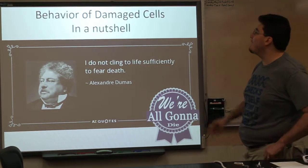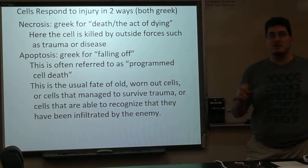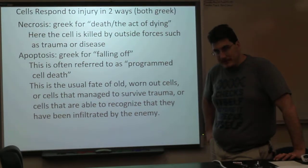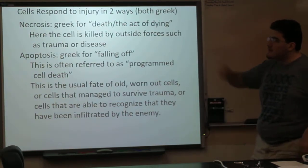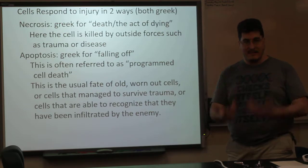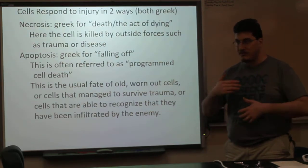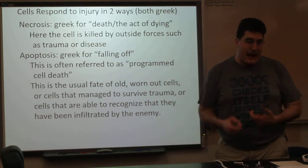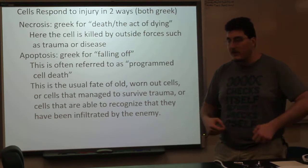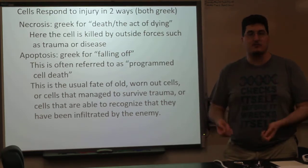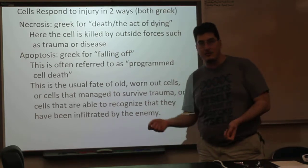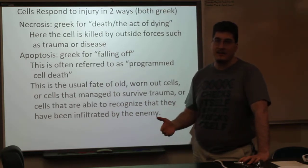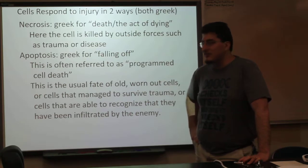Cells will respond to injury in two ways, and both of those ways have Greek names. Necrosis is Greek for death or the act of dying — here a cell is killed before it has a chance to put its affairs in order. Apoptosis — spelled apoptosis but pronounced apoptosis — is Greek for falling off, and is often referred to as programmed cell death.